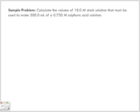Calculate the volume of 18.0 moles per liter of a stock solution that must be used to make 500.0 milliliters of a 0.750 moles per liter of sulfuric acid solution.